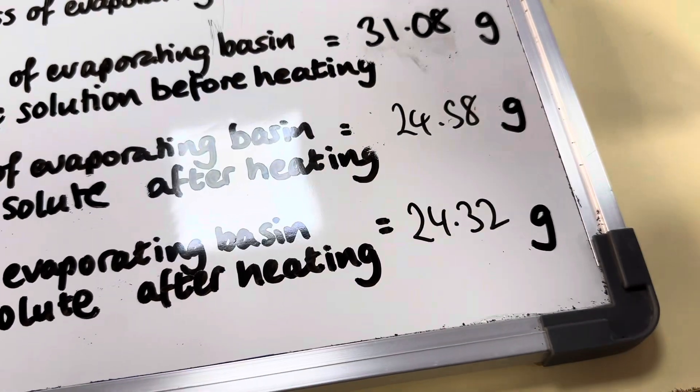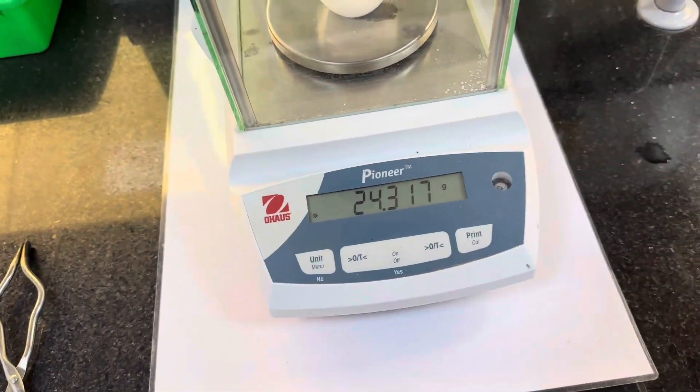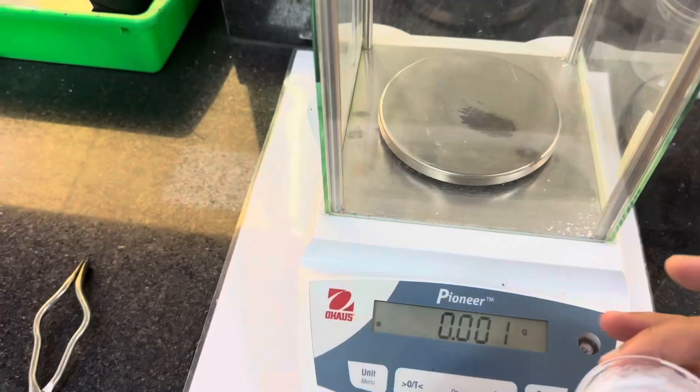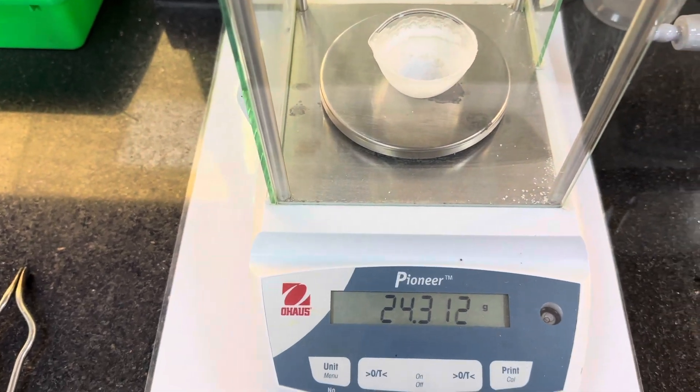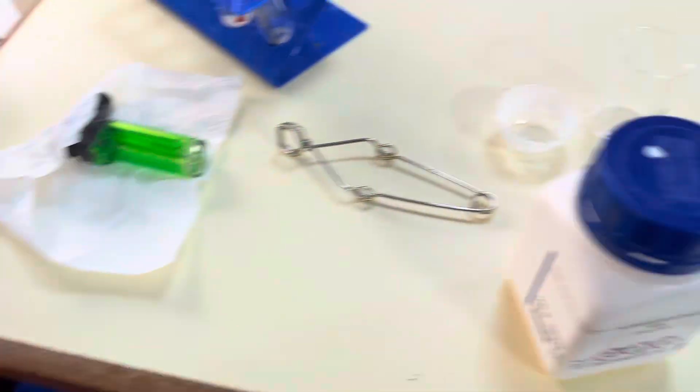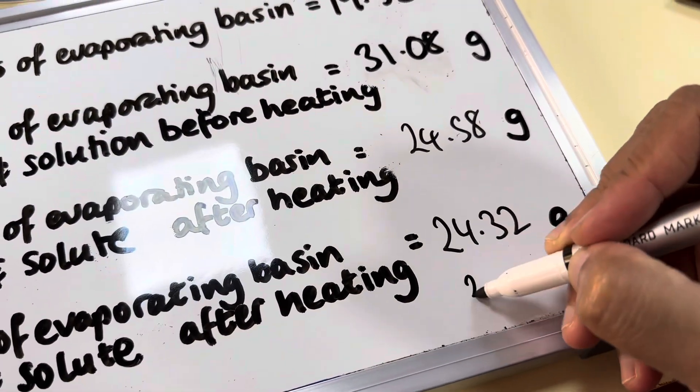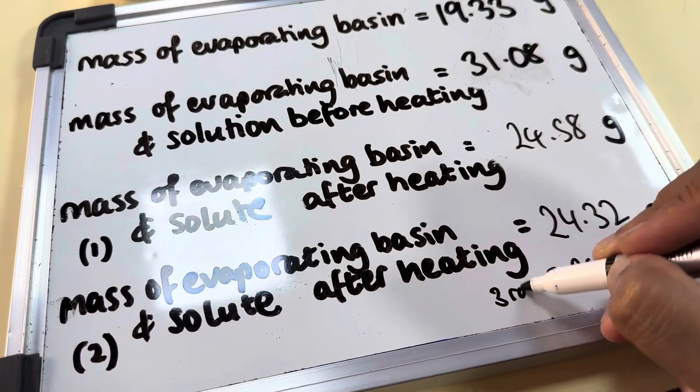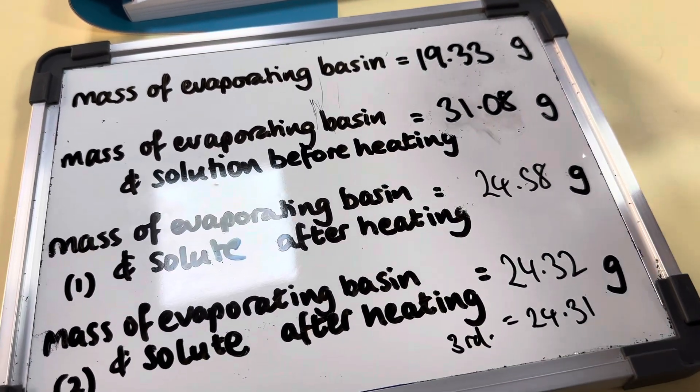Back to the water bath we go. I'm going to measure the mass. If it's insignificant, we will stop. 24.312 and our previous one was 24.32. So it's pretty much where I can suggest it is constant. So it's 24.31. That's the third time. So that's the mass of the evaporating basin and the solute after heating. This is pretty much constant given the accuracy of our balance.